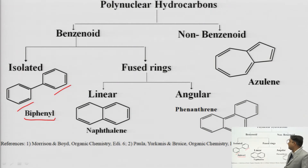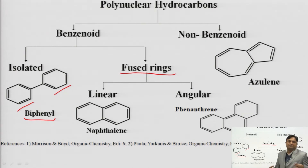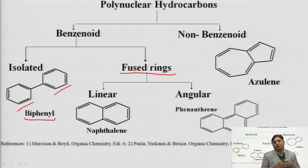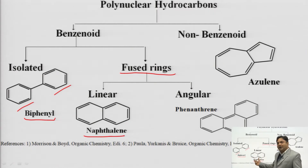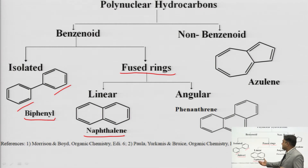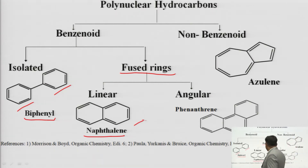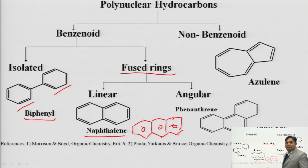The second category of benzenoid compounds includes fused ring benzenoid compounds. These fused rings means the compounds are fused with each other at certain positions - they are not joined by a bond, instead they are fused. They may be of two types: linear fused ring compounds or angular fused compounds. In the case of naphthalene, both rings are fused in a linear fashion at the ortho position. Anthracene is another example, having three benzene rings fused in a linear manner.